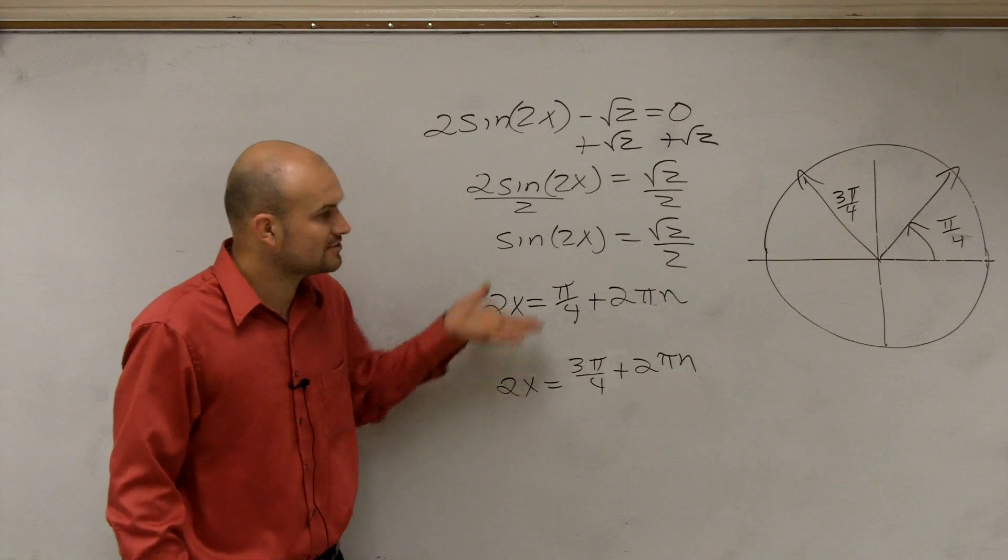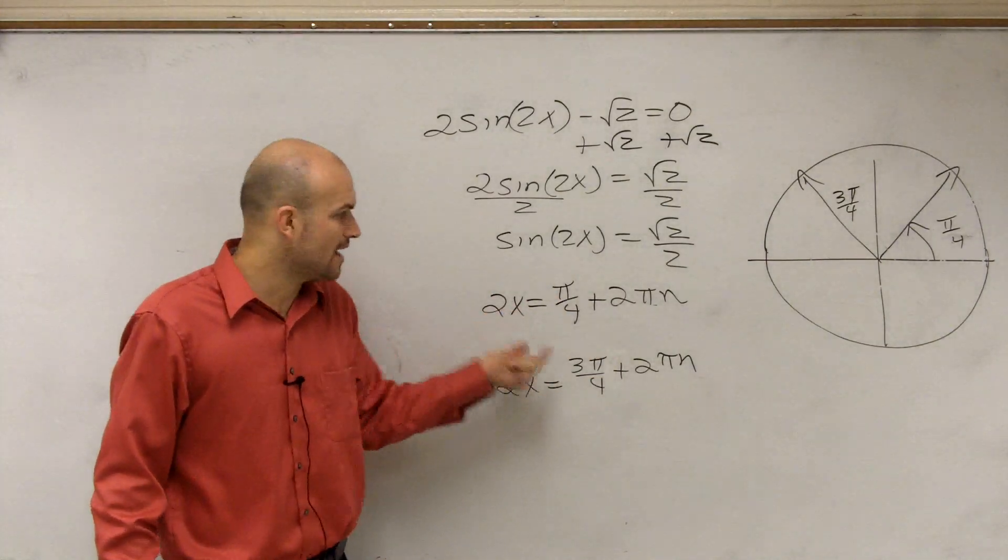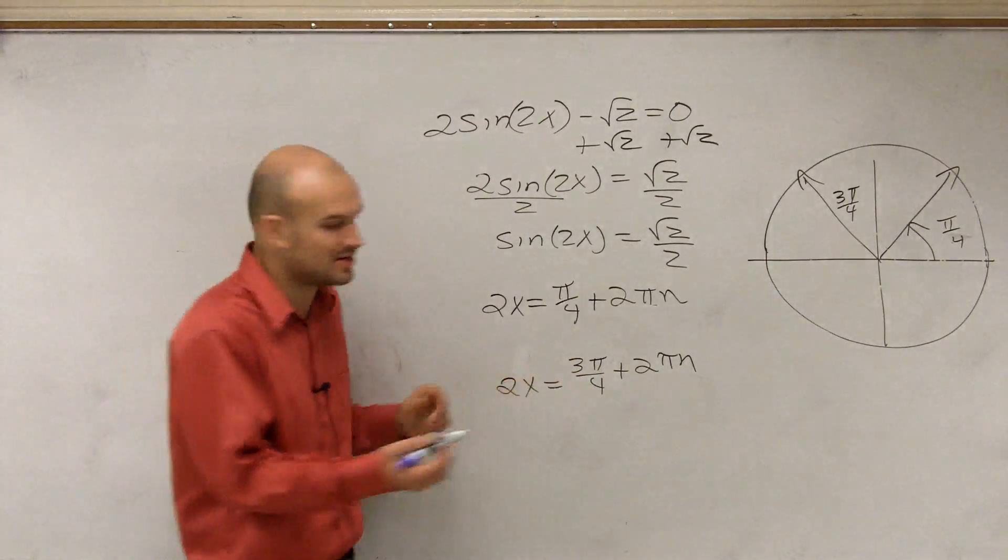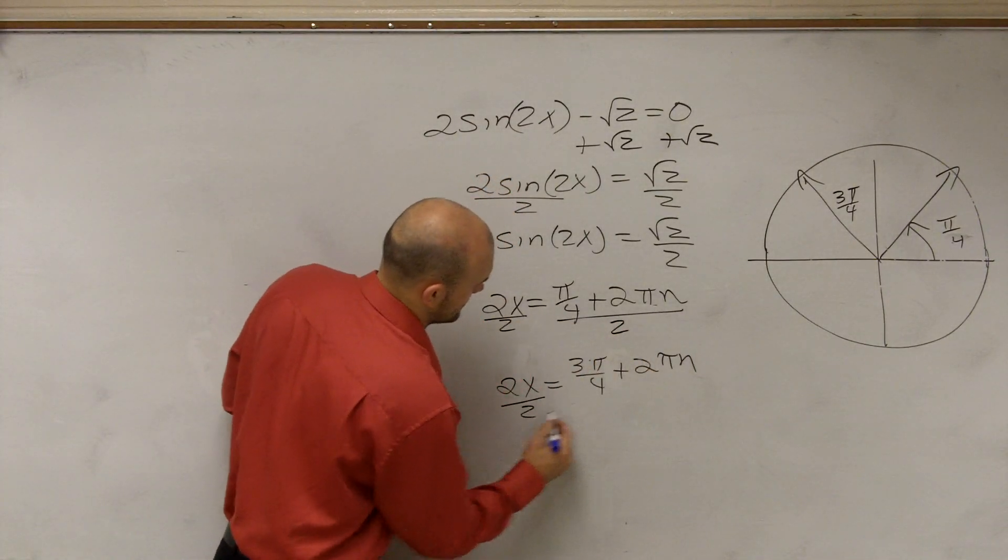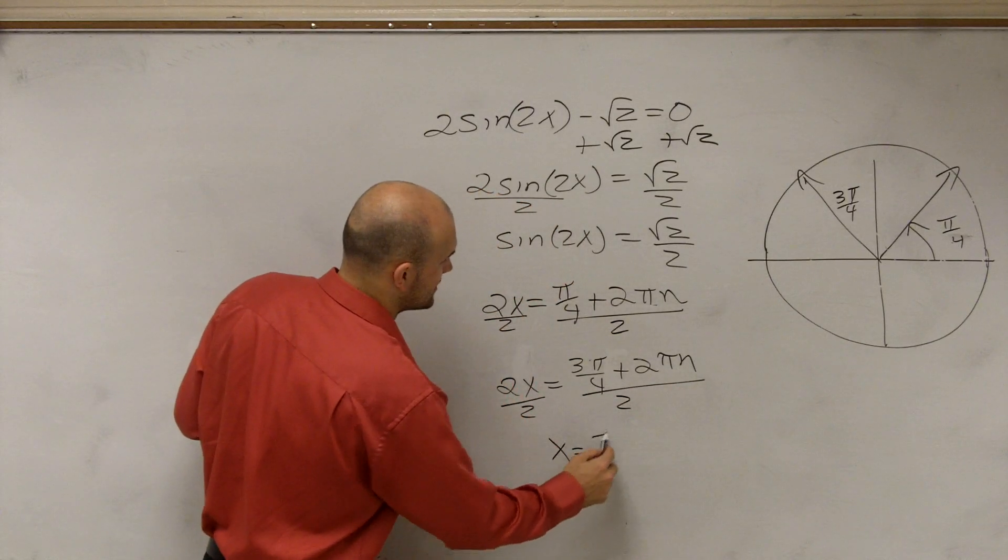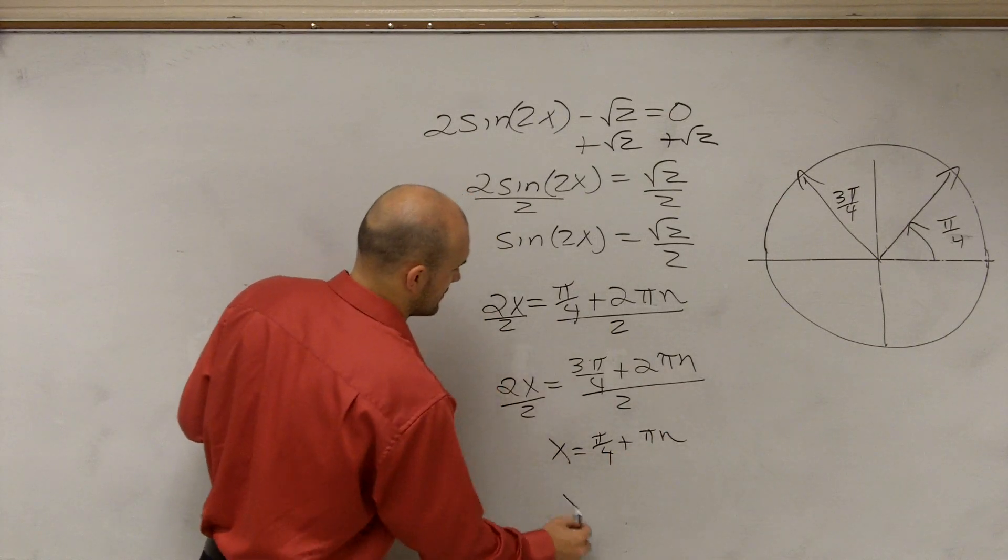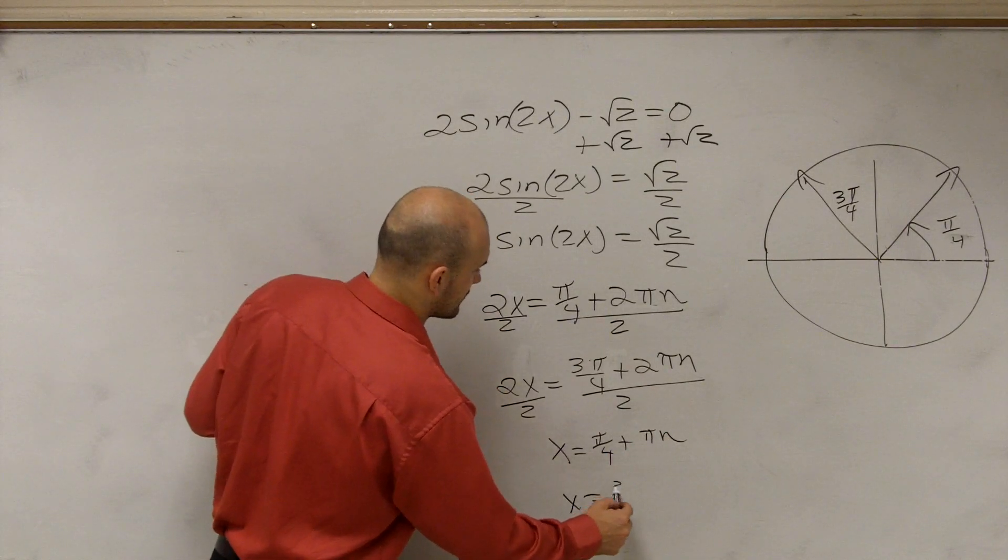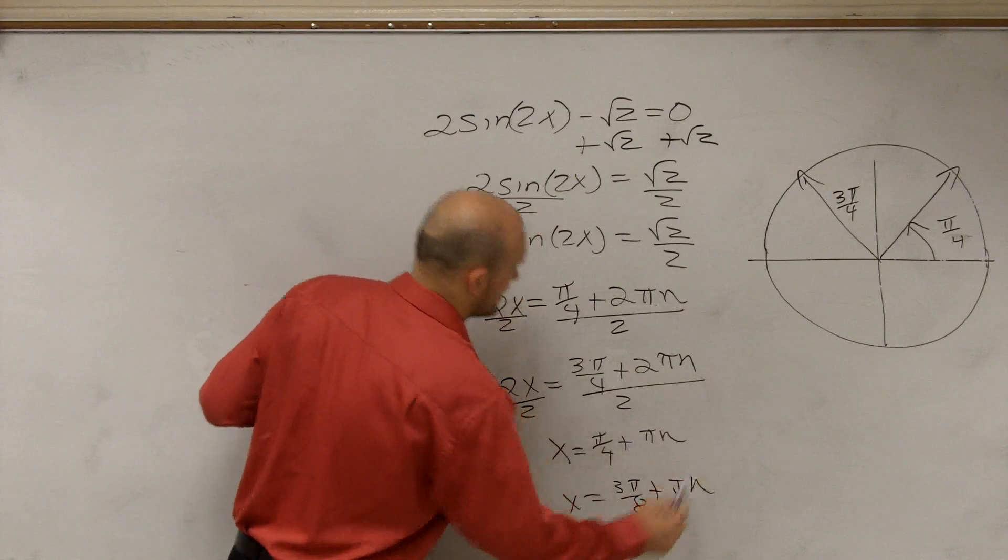So now, you look at this, well, now we can undo the multiplication of 2. Does that make sense now? Because now, that's the last thing, that last operation that's happened to my variable. So now, I divide by 2. And therefore, my final solution is going to be x equals pi over 4 plus pi n. And x equals 3 pi over 8 plus pi n.